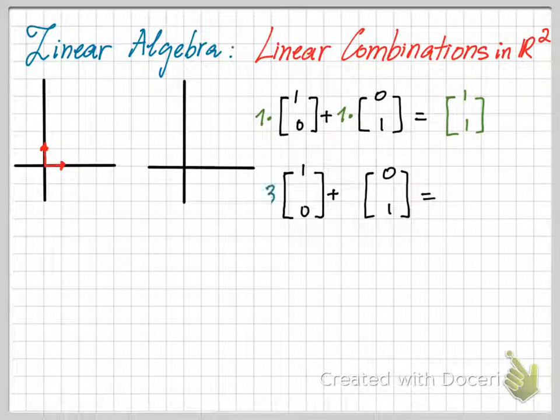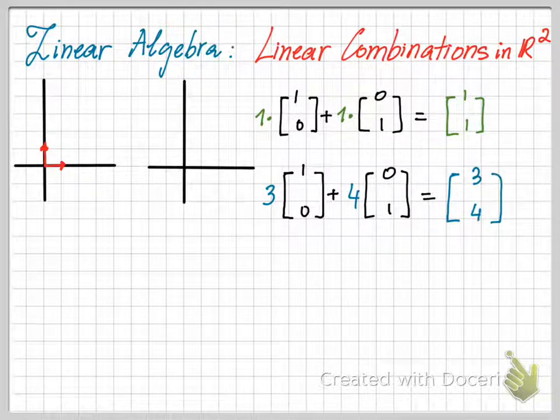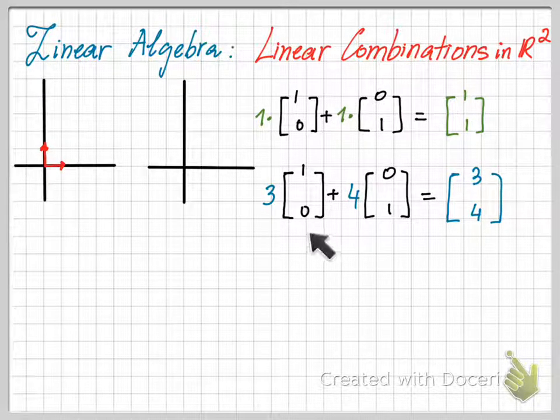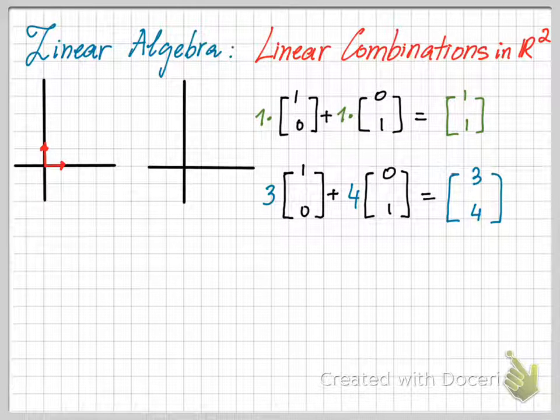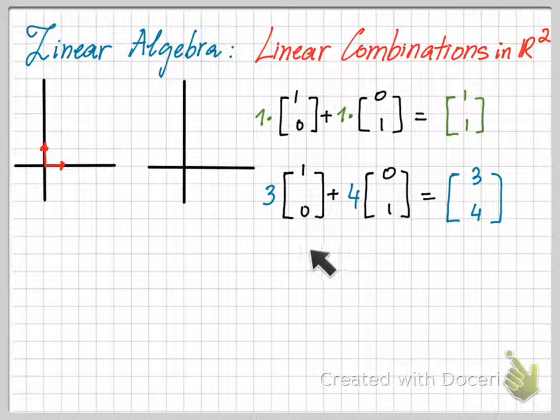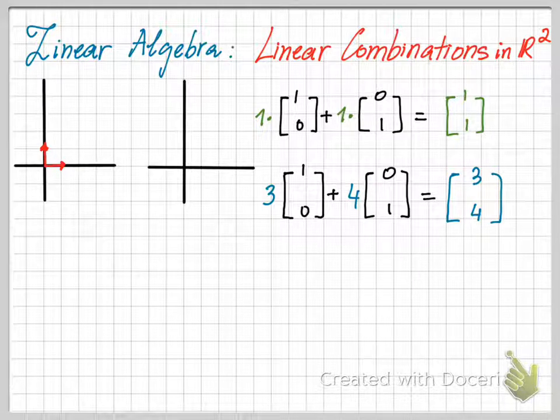Let's use the same pair of unit vectors, but this time multiply the first unit vector by 3 and the second unit vector by 4. When you add the two new vectors, you will get the vector [3,4].